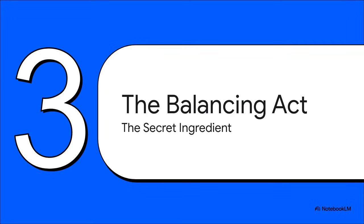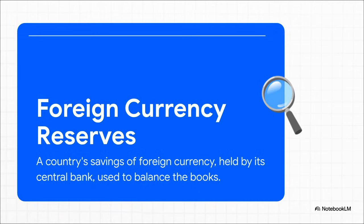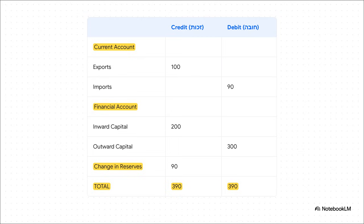This is where the real magic of macroeconomic accounting comes in. There is one final, critical piece that makes everything balance out perfectly: foreign currency reserves. Think of this as a giant national savings account full of foreign money — dollars, euros, yen — held by the country's central bank. Its job is to be the ultimate balancing item. We had a shortfall of 90, so the central bank simply sells 90 from its stash of foreign currency reserves. That sale is counted as a credit, money coming into the domestic economy. We add that 90 to the credit side, and both sides now total 390. By definition, the balance of payments always balances to zero.